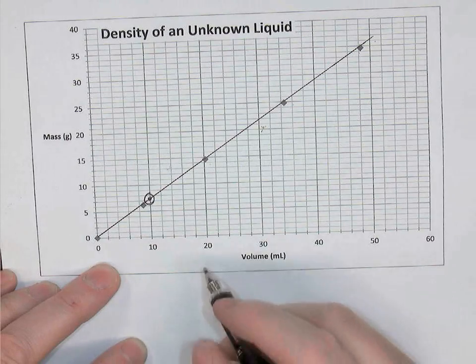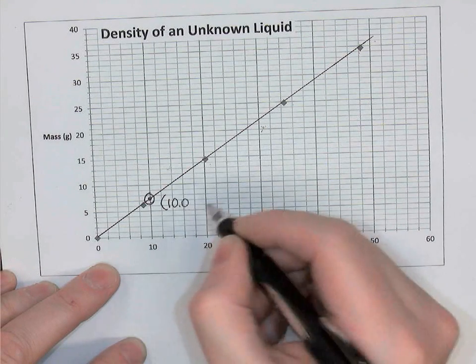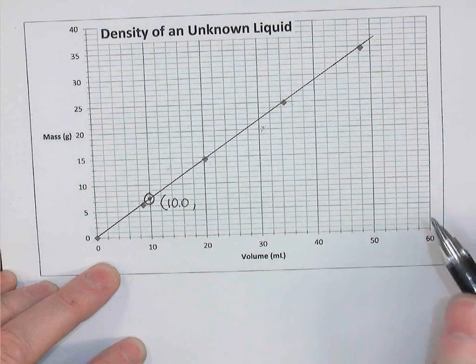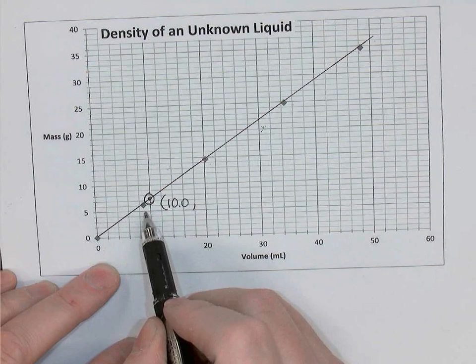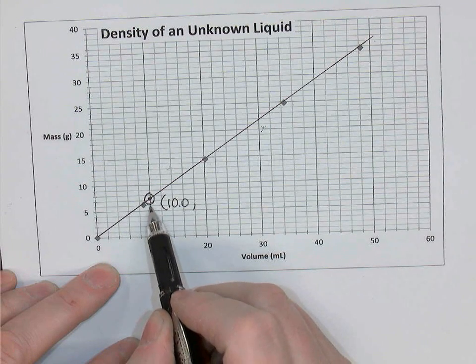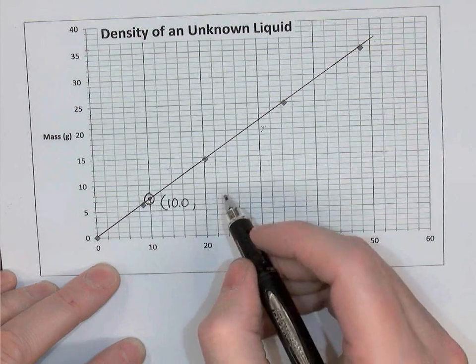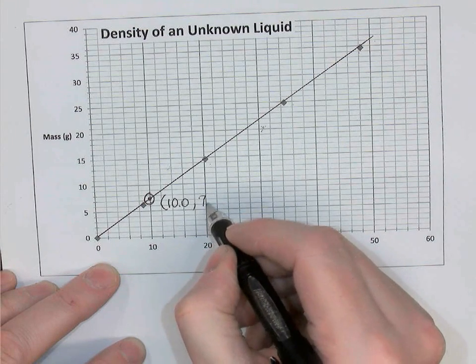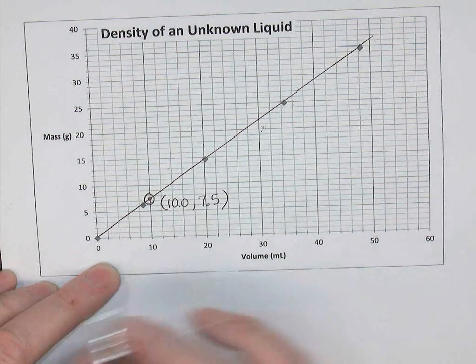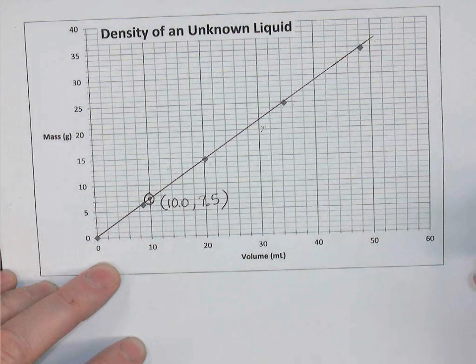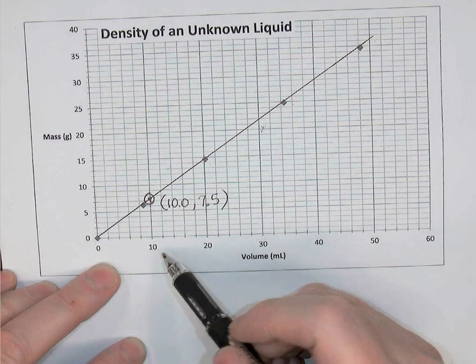And now I can give the coordinates of that point. I know that the x value is 10.0 milliliters. And the y coordinate, I'll have to estimate it. It's like reading a graduated cylinder. So five, six, seven, eight. It's between seven and eight. And it looks to be about halfway. So I'll say 7.5 grams. I know I didn't say halfway just because I was picking the middle. It actually does look like it's halfway between the two tick marks.